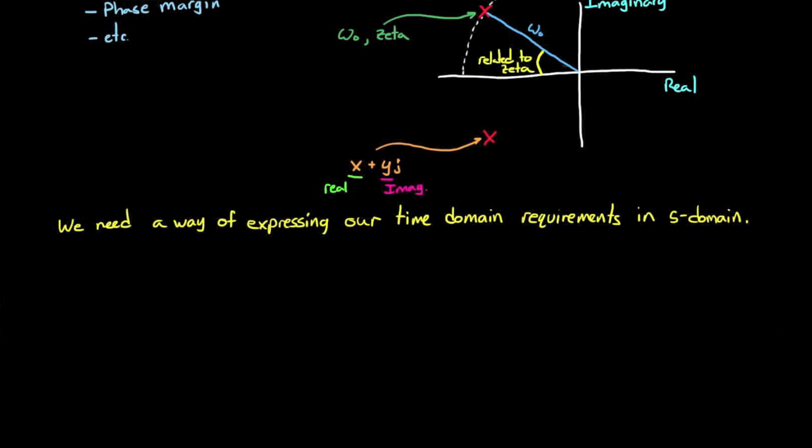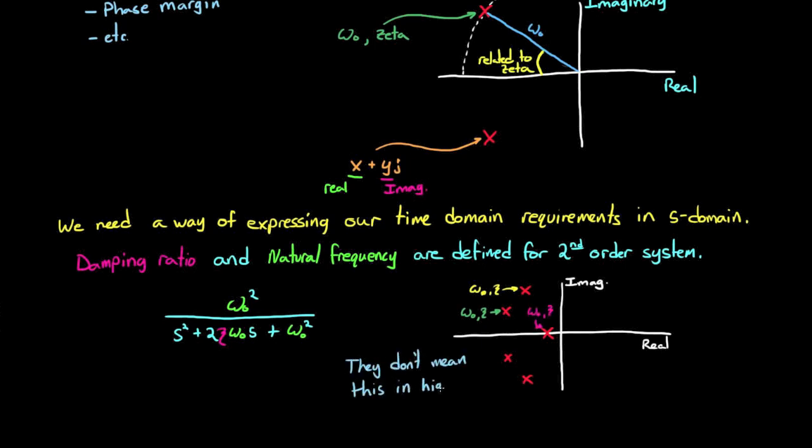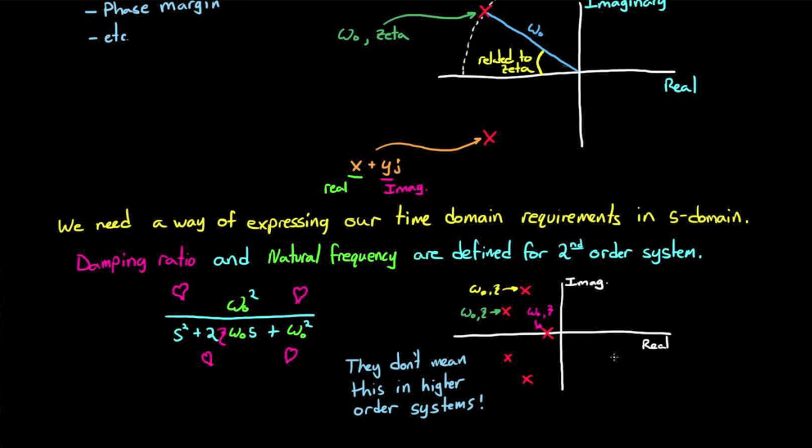Let's see how we actually express our time domain requirements as pole and zero locations in the s-plane. Here's where the confusion can set in if you don't know exactly why you're doing this. The very ideas of damping ratio and natural frequency are only defined for a second-order system. You can see them right there in the second-order equation. Now you can always use damping ratio and natural frequency to define a physical location in the s-plane in polar coordinates, but they lose their meaning if the system is not a second-order system or at least behaves like a second-order system.